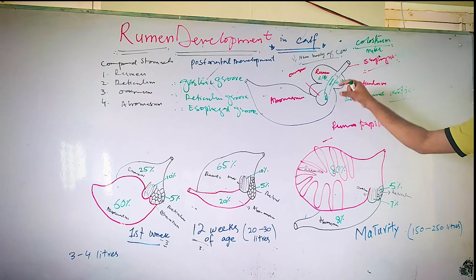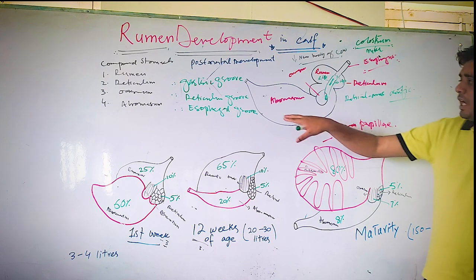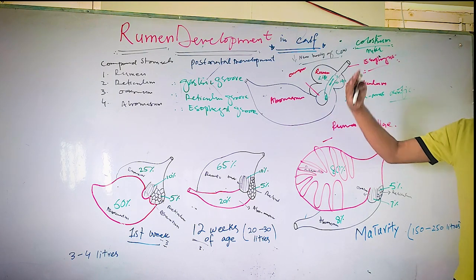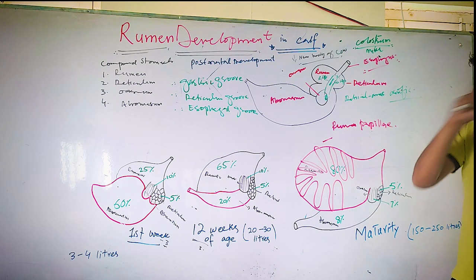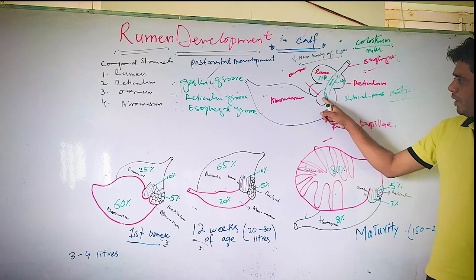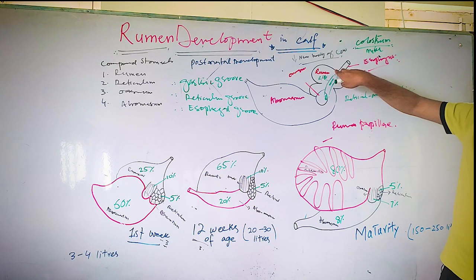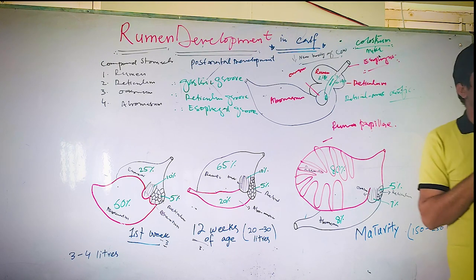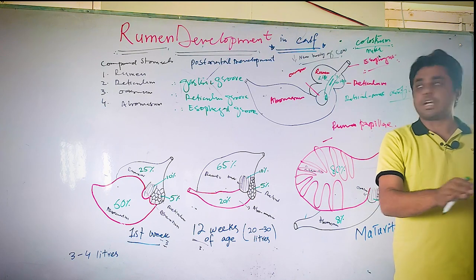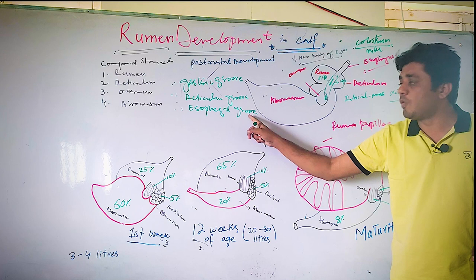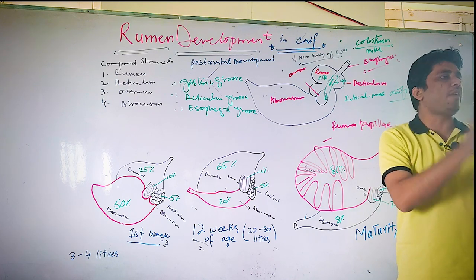So these two lips — the muscular folds right and left of the gastric esophageal groove — they start from the cardiac orifice and end up at the reticular orifice, so they are making a tube. These lips actually become closed. We call this esophageal groove closure. They close and form a tube.